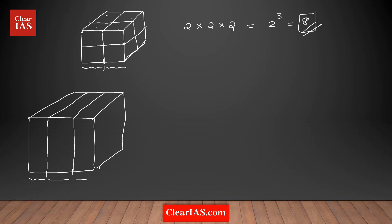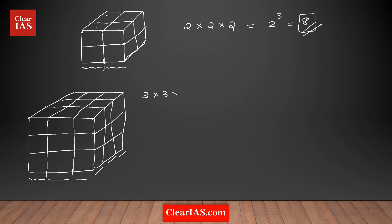Along the width, I'm also cutting into 3 sections, so you're getting 3 there: 1, 2, 3. Similarly along the height, I'm cutting as well. So the total number of cubes is 3 × 3 × 3 — that's 3 cubed, or 27 cubes.